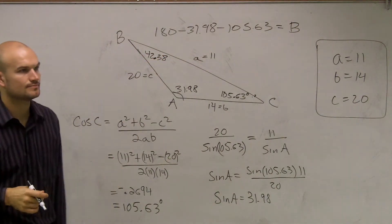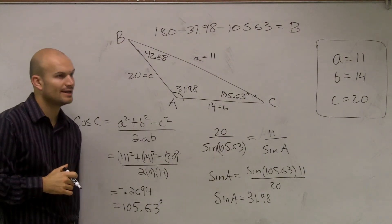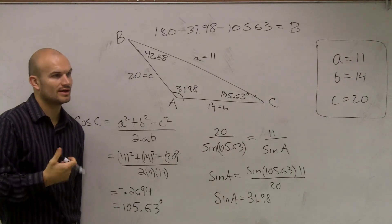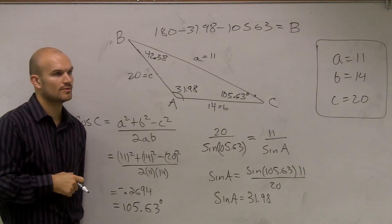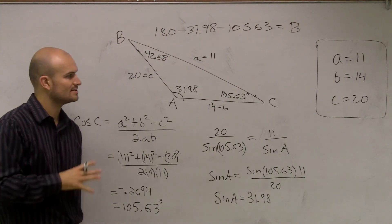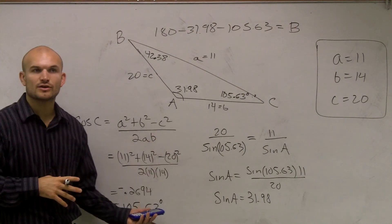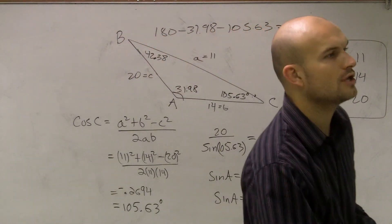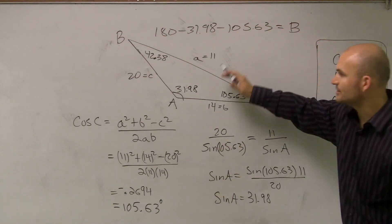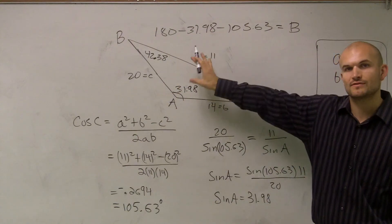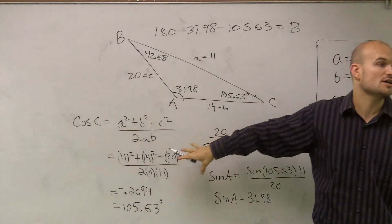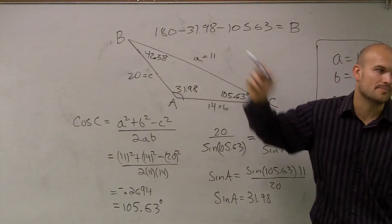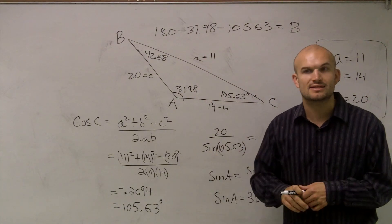So that would be 180 minus 31.98 minus 105.63 equals 42.38 degrees. If your answer is slightly different, it's just rounding. The main important thing is: use the law of cosines to figure out your largest angle first. Once you have that, use the law of sines to figure out another angle. Then use the fact that all angles add up to 180 to find the last angle.